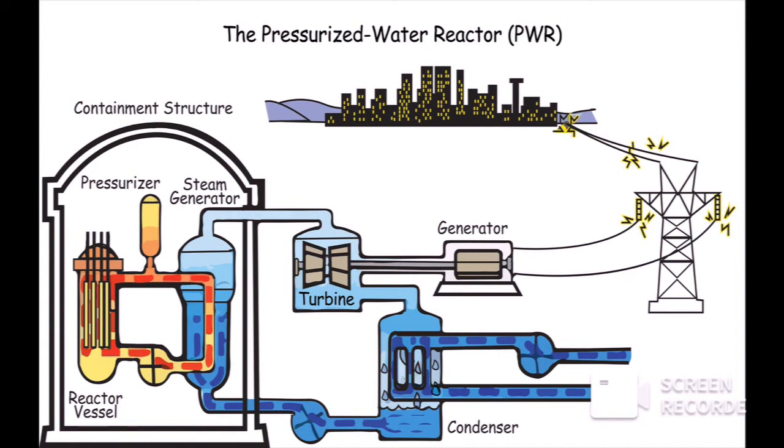Energy produced is used to generate steam, and that steam rotates the turbine, which remains connected to the generator and produces electricity.